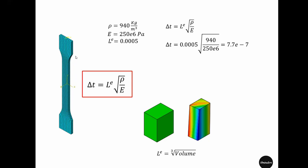As a result, your simulation time would be 10 times higher. So it is very important in explicit simulation to keep the minimum element size as large as possible, because one small element can destroy all the advantage of having larger elements everywhere else.